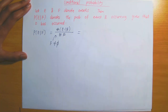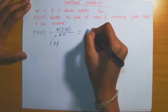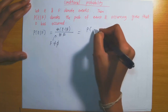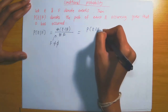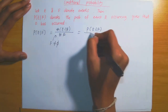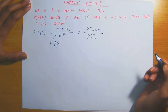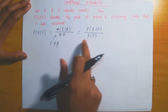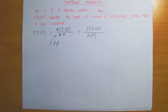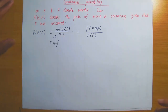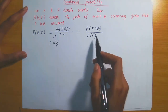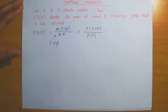If we are working with a general sample space, we could rewrite this as the probability of E intersection F divided by the probability of F. So here are the two formulae: one using a reduced sample space, and the other using a general sample space.